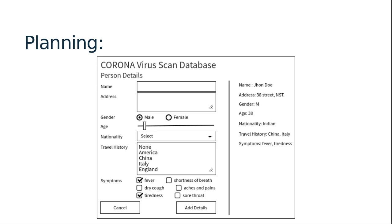I've created one form for a database of person details, where we have a name with a text field, address with text area, gender with radio button, age with a slider, nationality with a combo box drop-down list, travel history with a list view, symptoms with checkboxes, and either cancel or add details as buttons. All the left-side items are labels. When we click add detail, we are going to fetch all these details and display them on the right side. This application will cover all those UI controls we need to cover in this unit.